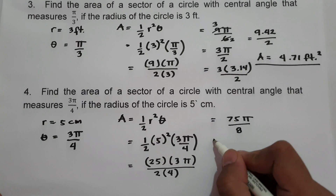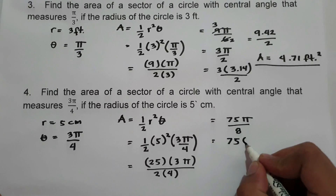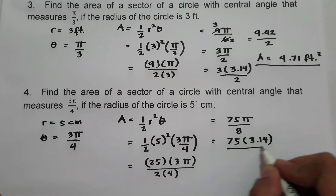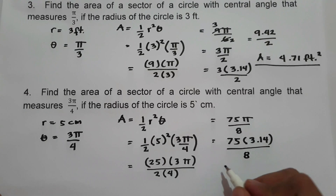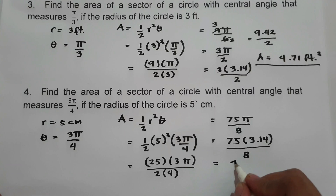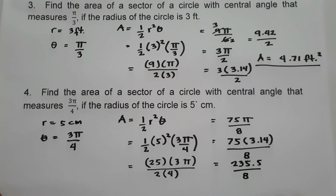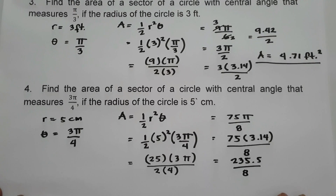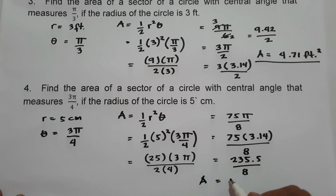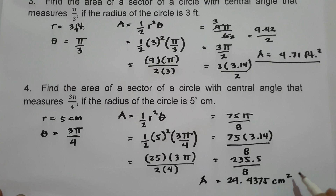Let us substitute pi equals 3.14, so we have 75 times 3.14 over 8. Then 75 multiplied by 3.14 is 235.5, divided by 8. That gives 29.4375 centimeter square. This is the area of our sector.